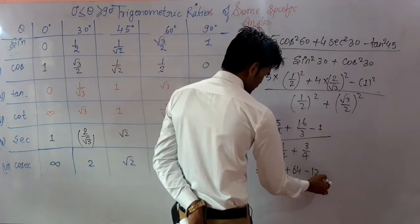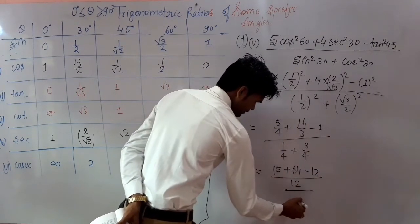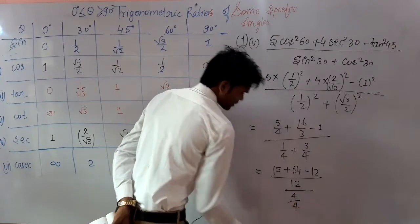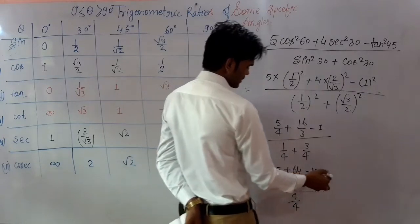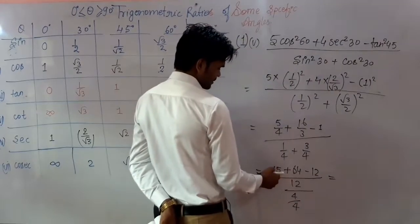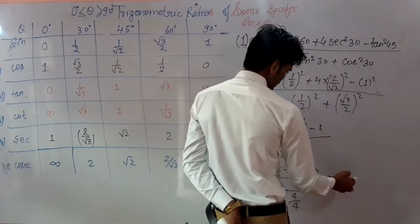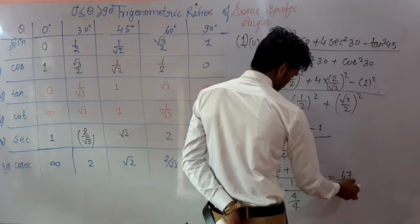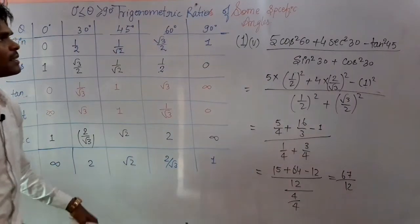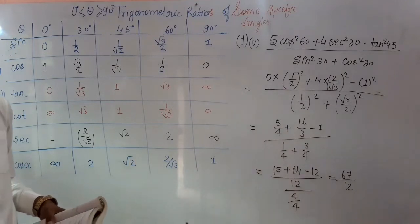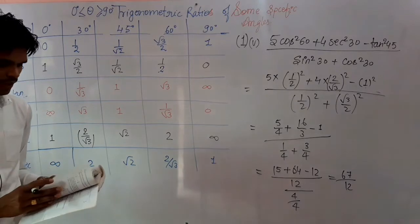Minus 12 upon 12, whole upon 4 upon 4. Now adding and subtracting, you get 64 plus 15, which is 79. 79 minus 12 gives you 67, whole upon 12. So in this way we have obtained the given values. Now moving towards the next question of this exercise, question number third.